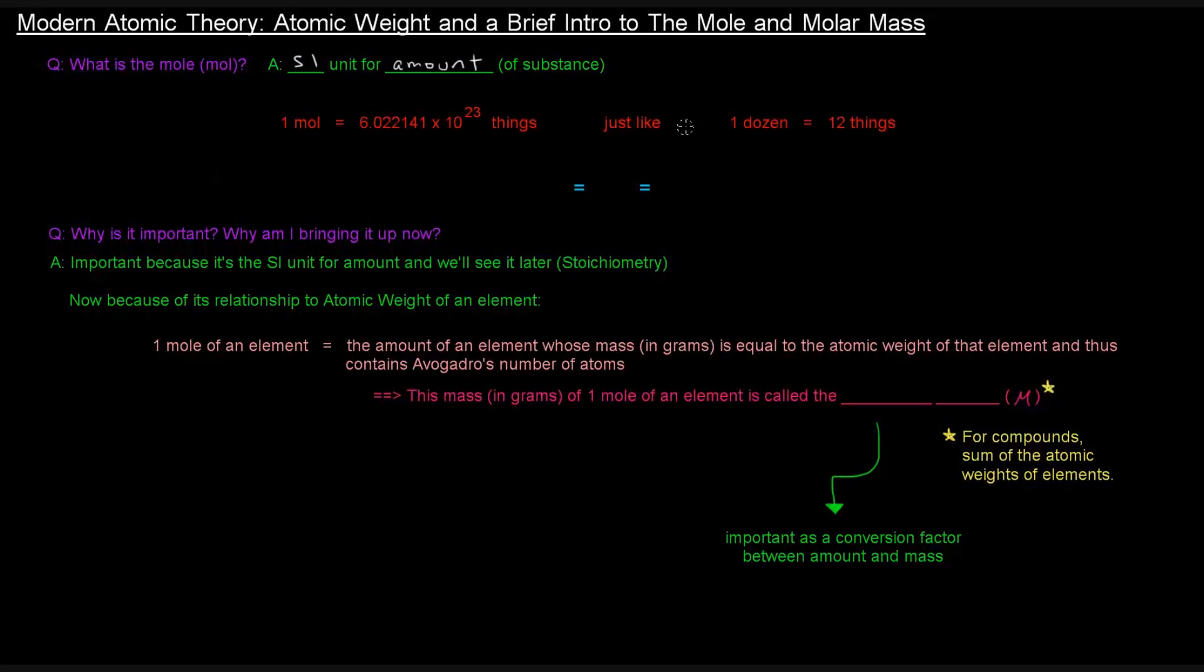Just like one dozen equals 12 things. If you have a dozen eggs, you have 12 eggs. If you have one mole of eggs, you have 6.022141 times 10 to the 23rd eggs.